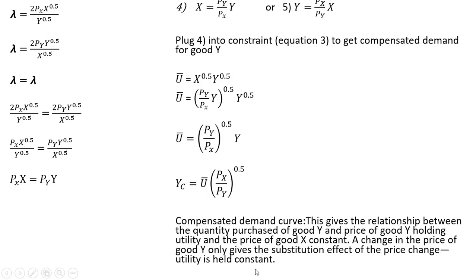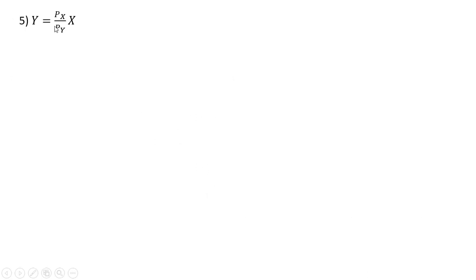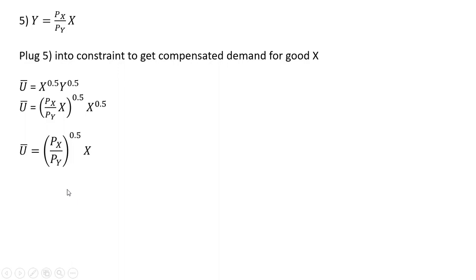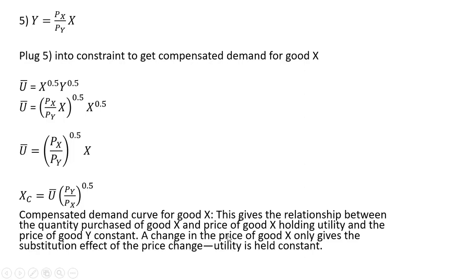Let's get the compensated demand for good x. Taking equation five and plugging it into the constraint for a fixed amount of utility, we get this result, simplifying — x to the 0.5 times x to the 0.5 is x. Here is our compensated demand curve for good x, with the same interpretation: this gives the relationship between the quantity purchased of good x and the price of good x, holding utility and the price of good y constant. A change in the price of good x only gives the substitution effect of the price change, as utility is being held constant.